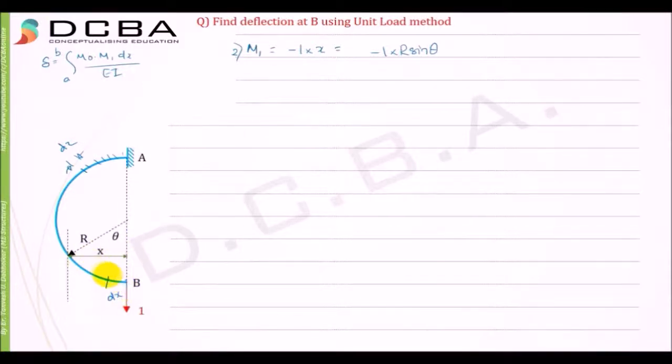dx subtends an angle of d-theta here. Let this angle be equal to d-theta. From the arc formula, I can write dx is equal to r d-theta. From the subtended arc formula we can write that.